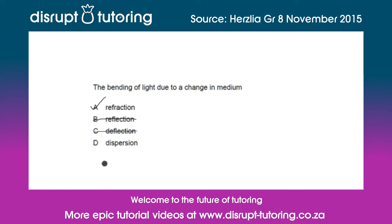Dispersion is also not the answer because dispersion is the splitting of visible light into its constituent or component colors — the colors that make up white light — while passing from one medium to another. This is the phenomenon responsible for creating things like a rainbow.